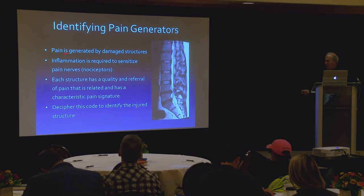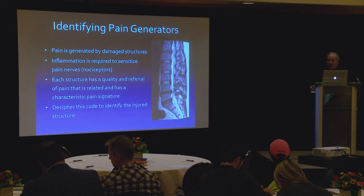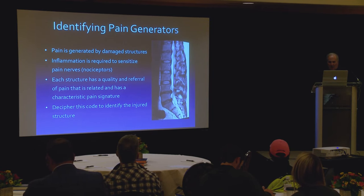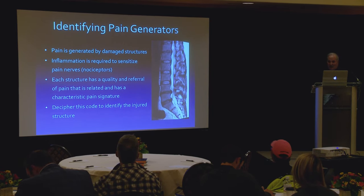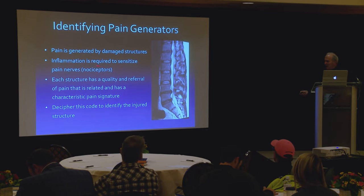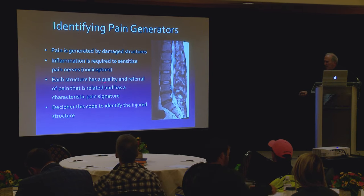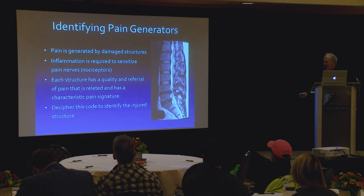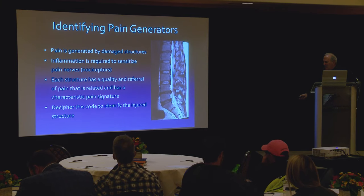Pain is generated by damaged structures, unless there's a chronic radiculopathy — which really still is a damaged structure. Inflammation is required to sensitize the pain nerves. Each structure has a quality and referral of pain that is related and has a characteristic pain signature. Your job is to decipher this code. Not that hard, but it does get a little complex.